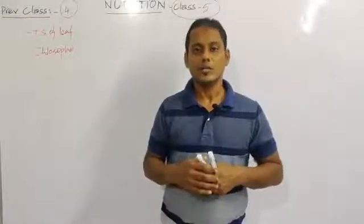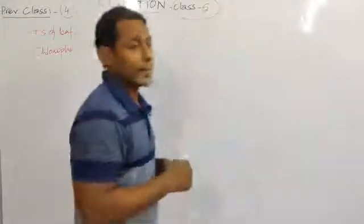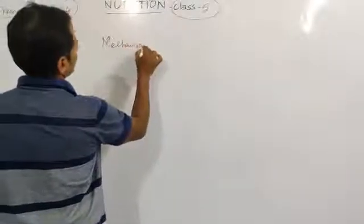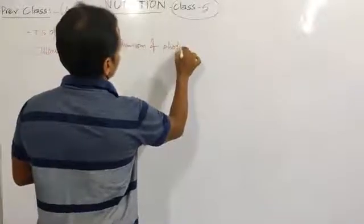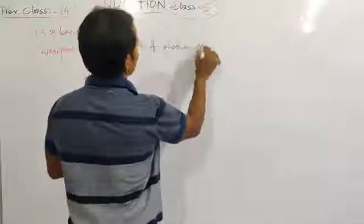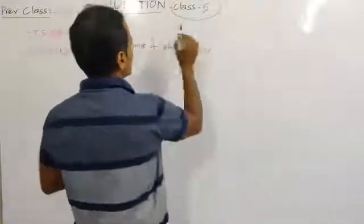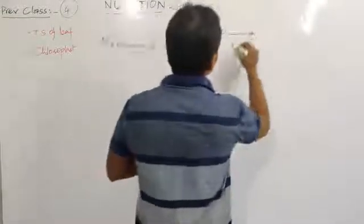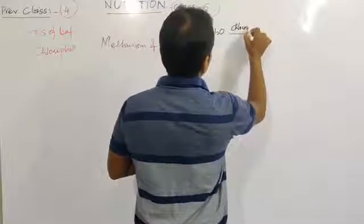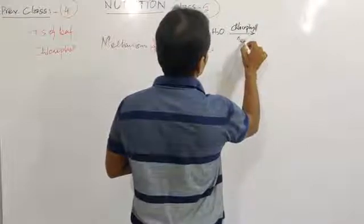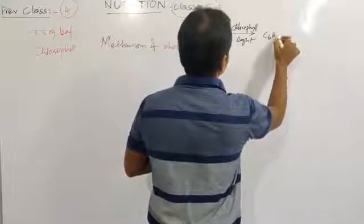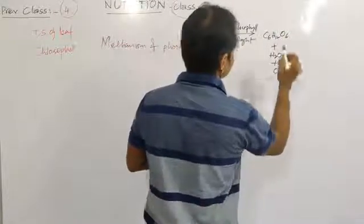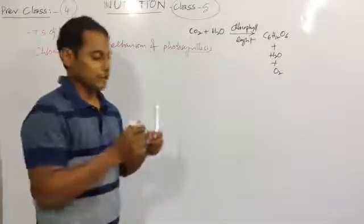Let's see the mechanism of photosynthesis. First, the equation: carbon dioxide plus water in the presence of chlorophyll and light produces C6H12O6, which is glucose, plus water, and oxygen is liberated in the photosynthesis process.